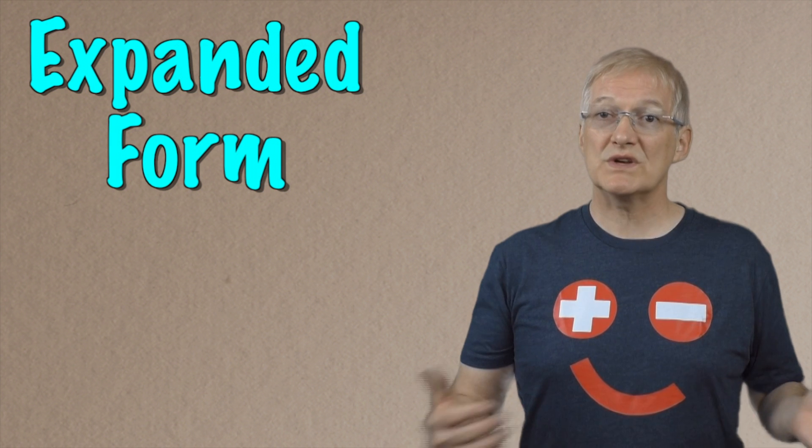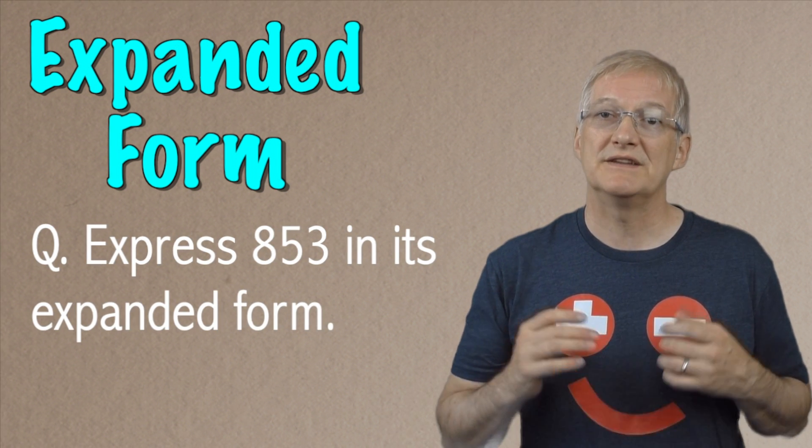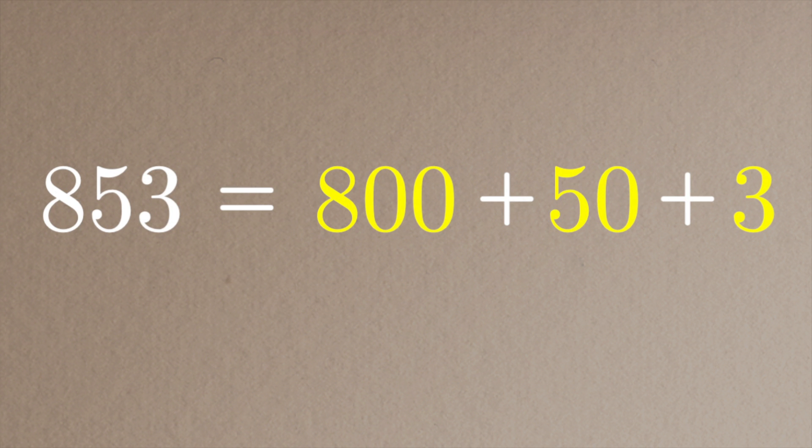But what does a typical math question involving place value actually look like? The question might say: express 853 in its expanded form. When I look at 853, the 8 is in the hundreds place so I've got eight groups of 100, which represents 800. The 5 is in the tens place so I've got five groups of 10, which is 50. And the 3 is in the ones place, so I've got 3 left over. The expanded form is simply 800 + 50 + 3.